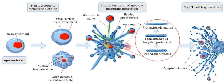However, problems within a cell can sometimes cause fragmentation that results in irregularities such as red blood cell fragmentation and sperm cell DNA fragmentation.